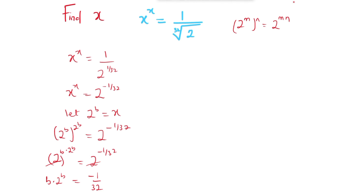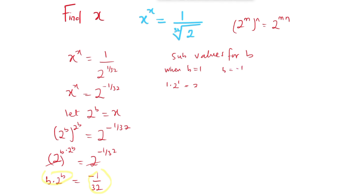We now need to substitute values for b such that the left-hand side and the right-hand side will be the same. If we substitute b equals 1, we get 1 times 2 raised to power 1, which is 2 — that is not the same as negative 1 over 32. Even with b equals negative 1, we only get negative 1 times 2 raised to power negative 1, which is negative 1 over 2.